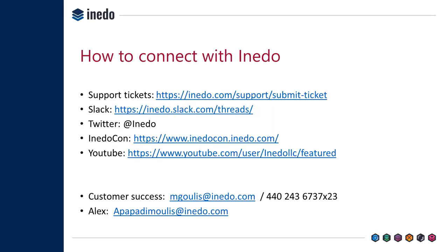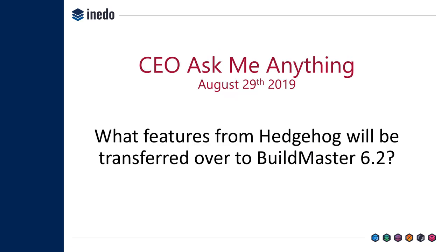The first thing I'll talk about is what are the main features that are going to come over from Hedgehog and into Buildmaster. There are two really interesting features I want to discuss. The first one is the Buildmaster pipeline engine that we will be replacing with the Hedgehog pipeline engine. On the face of it, they're going to look exactly the same, but what's cool is that Hedgehog basically turns everything into OtterScript.